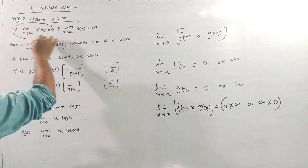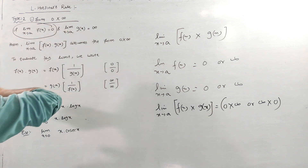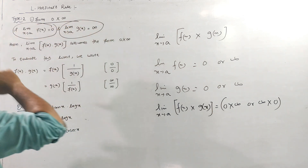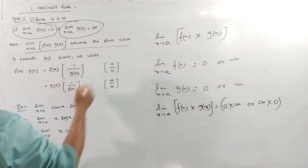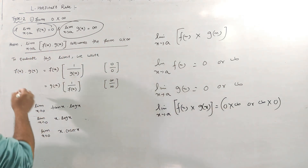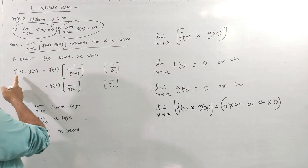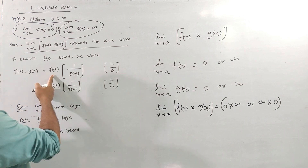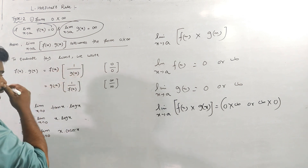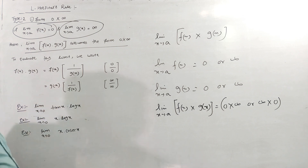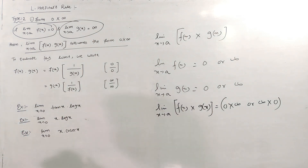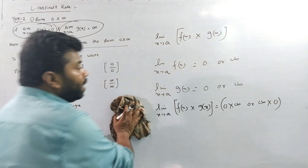So what should we do? If the limit as x tends to a of f(x) equals 0 and the limit of g(x) equals infinity, then f(x)·g(x) can be rewritten as f(x) divided by 1/g(x). Let's see what we are doing.